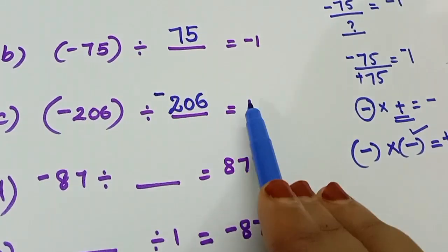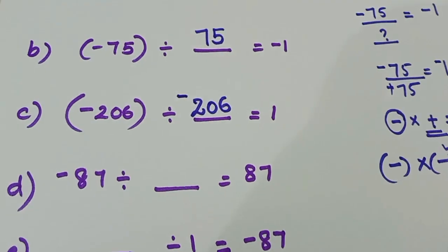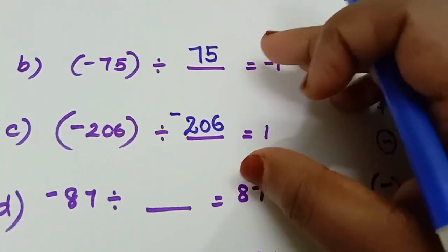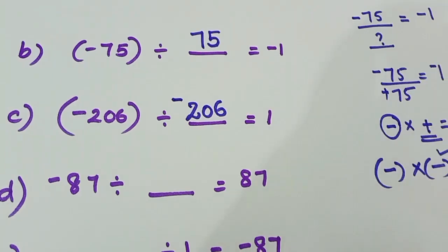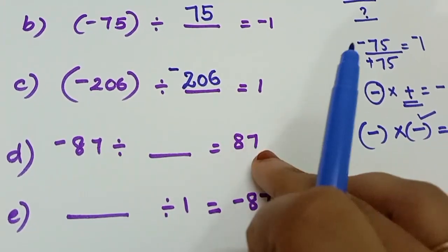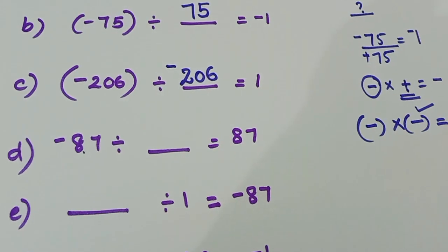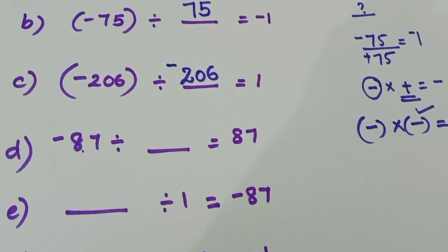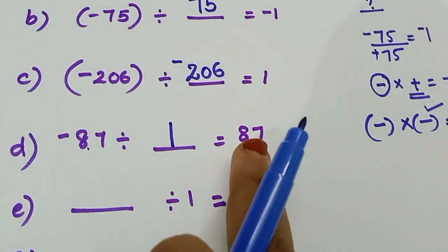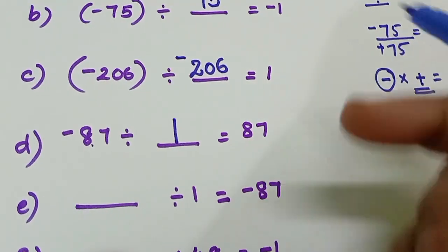Now we have minus into minus is plus. We will divide the same number by the same number. We will use the multiplication of integers — that rule will apply to the same number. The question is minus 87 divided by dash is equal to 87. This number is the answer; we will divide the same number. We will divide the same number. At this time we will divide the same number. Sign — the answer is plus sign.